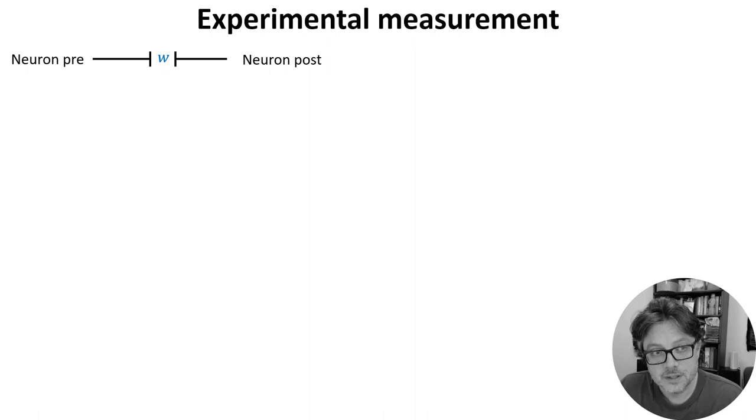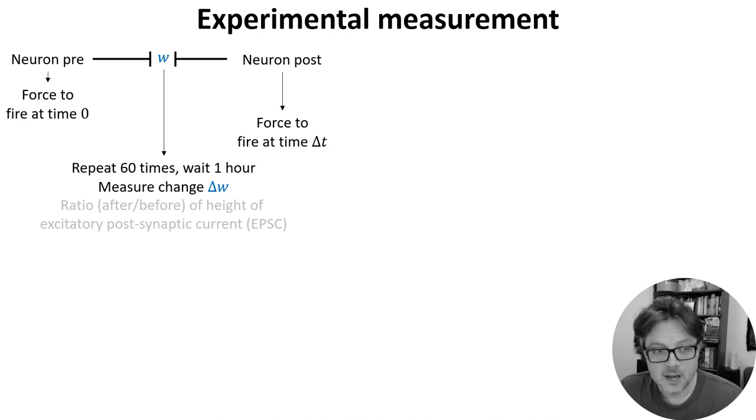We find a pair of neurons connected by a synapse. We force the presynaptic neuron to fire a spike at time zero and the postsynaptic neuron to fire a spike at time delta t. We then repeat this pairing, say, 60 times, wait around an hour and measure the change of the synapse. And we measure this by computing the height of a postsynaptic current from a single excitatory spike before and after the pairing.